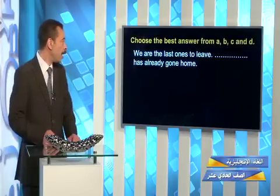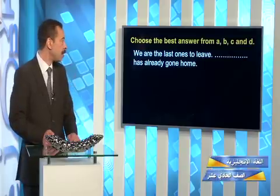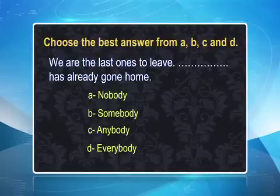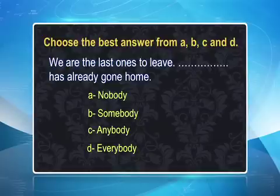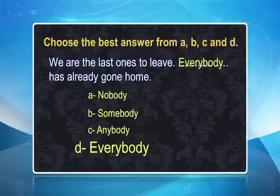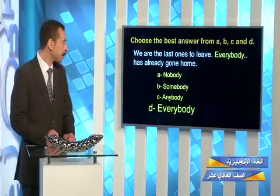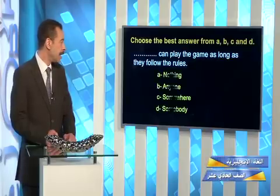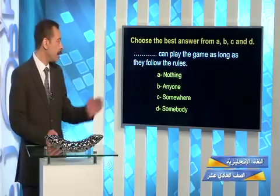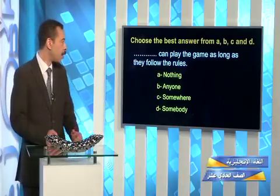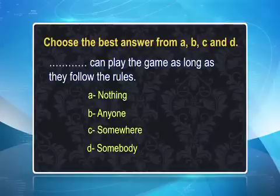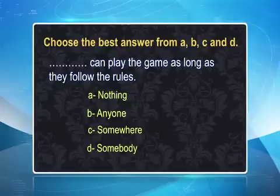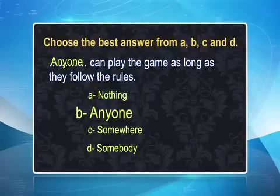Next question: blank can play the game as long as they follow the rules. Is it nothing, anyone, somewhere, or somebody? The verb play cannot be used with thing or where, so we choose between anyone and somebody. The answer is anyone — anyone can play the game as long as they follow the rules. Next: my birthday is blank March the 31st. Is it in, at, on, or from? It's a date with a day, so we use on — my birthday is on March the 31st.